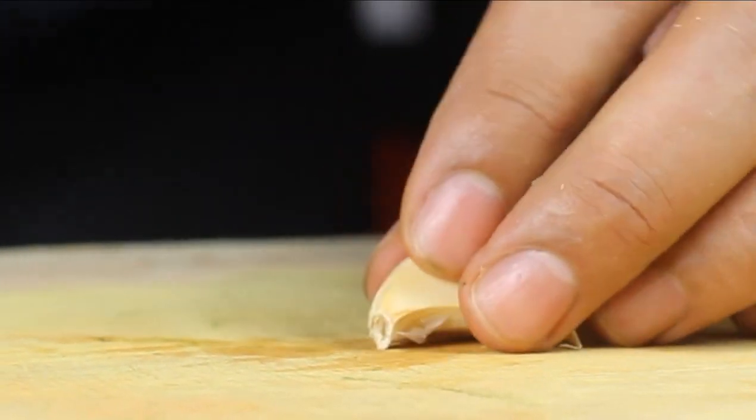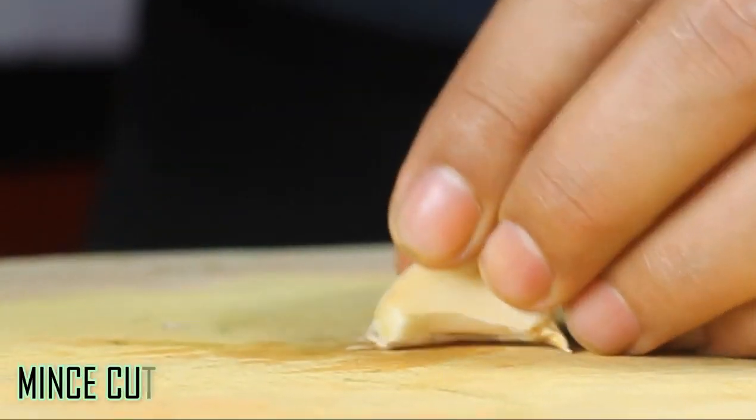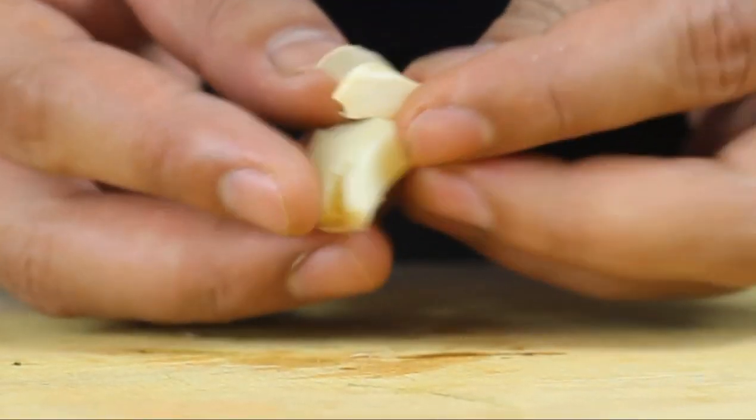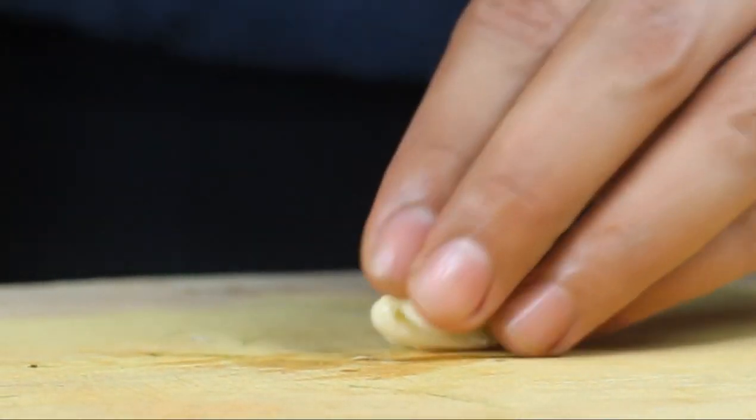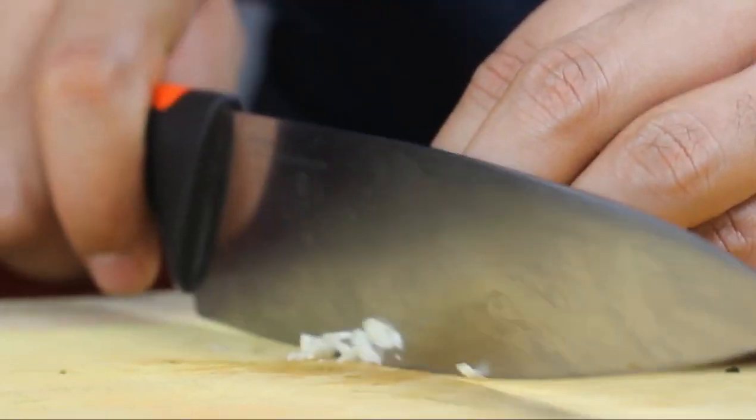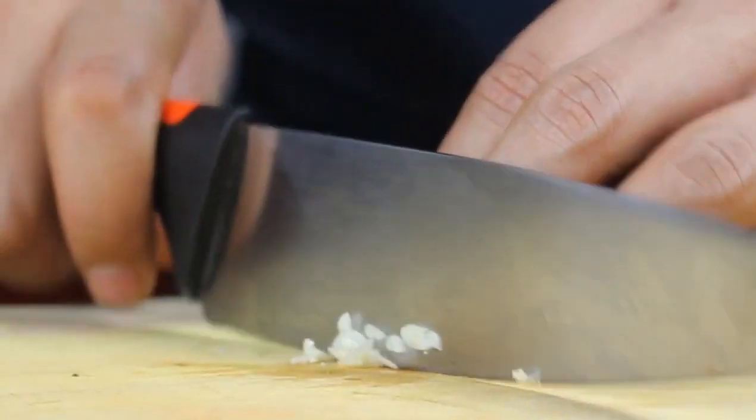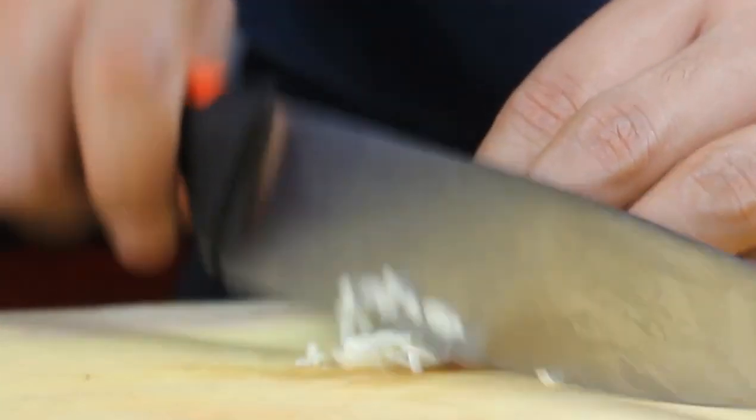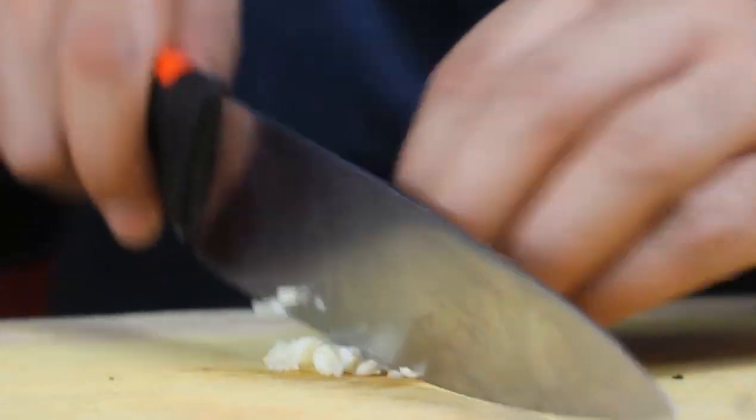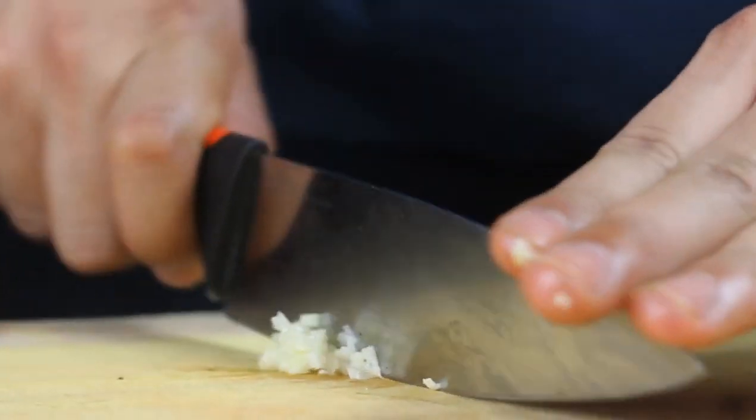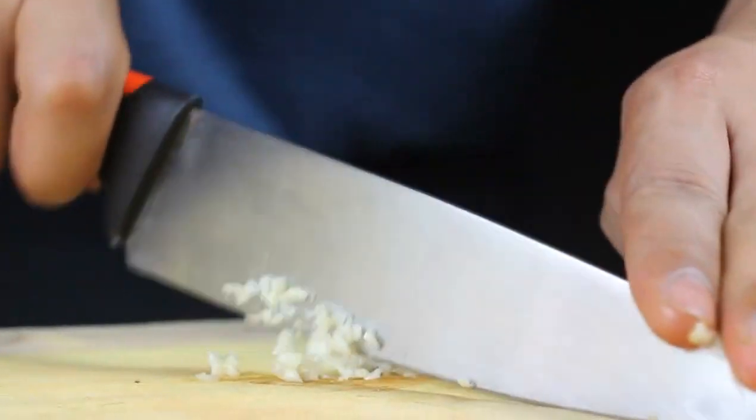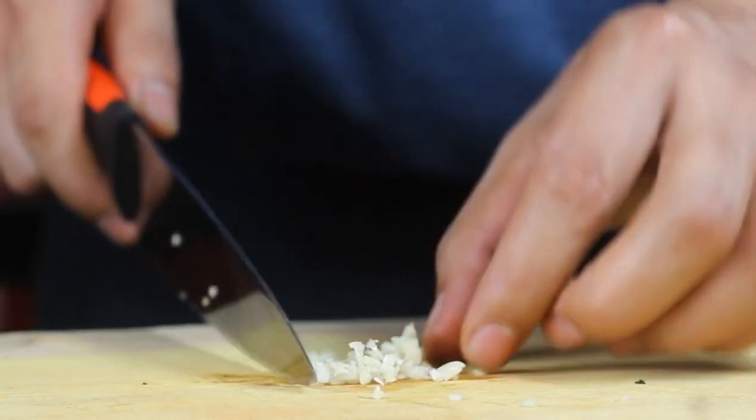Another common term we see on recipes is mince. We regularly do this cut with garlics and onions at home. For a mince, ingredients are cut very, very finely. Mince is seen as the ideal cutting technique for aromatics like onion, garlic, and ginger, where a paste-like consistency is desirable. Rocking your knife in this motion. This is how your mince would look like. Gorgeous!